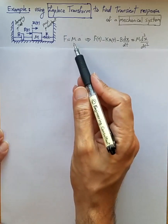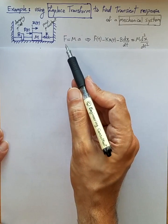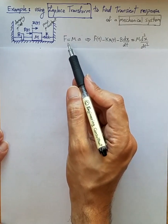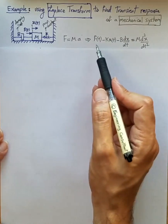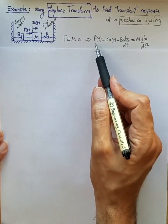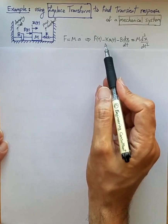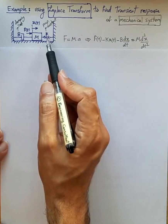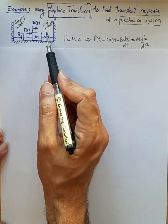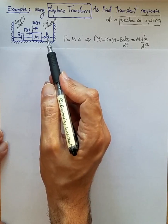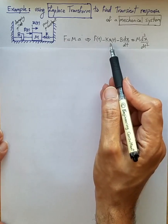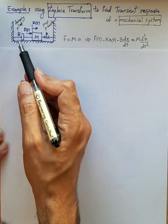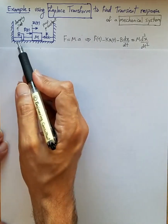To do that we first start with the well-known equation: the sum of all forces equals mass times acceleration. There are three forces involved, so the sum of all forces is the applied force f(t) minus k times x(t), because the spring applies a counter force proportional to the displacement.